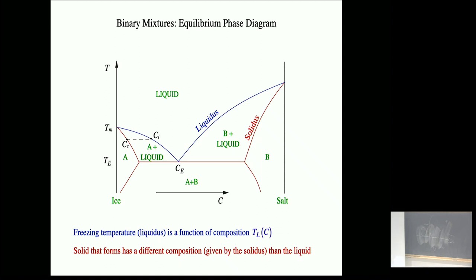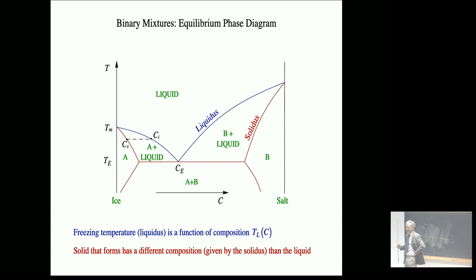This phase diagram is symmetric. We could start on the salt side — if we heat the salt sufficiently, we can melt it, actually around 801 degrees Celsius. If we add water, we can keep the system molten to lower temperatures. These two curves, called liquidus curves or freezing curves, meet at the eutectic concentration, which is the minimum temperature at any concentration at which you can have a liquid system. So the temperature reading is now minus 13.8 — quite dramatic.